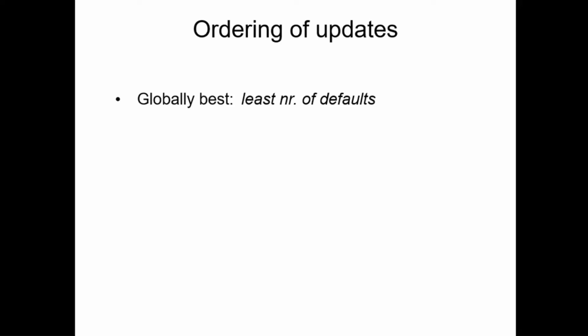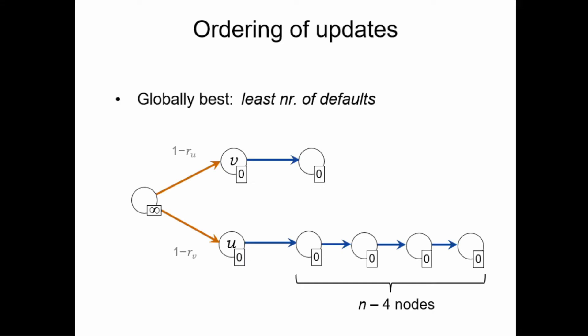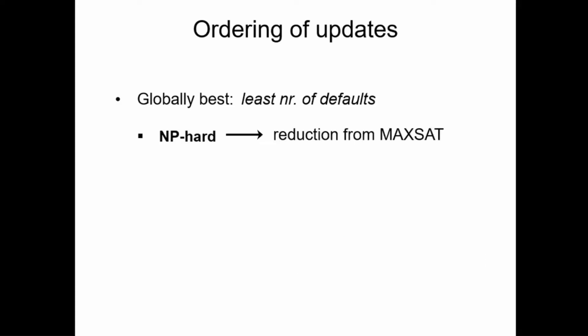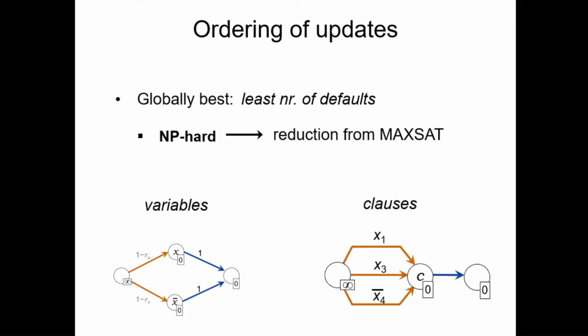From a financial authority's perspective, one natural goal would be to find the ordering that produces the smallest number of defaulting banks in the final outcome. One can create an example showing that this is highly dependent on the ordering: if V is the first to announce the default, the process terminates with a single default, while if U is the first, all nodes in the lower chain will eventually end up in default. One can also show that in general, finding this best ordering is an NP-Hard problem through a reduction from the MAX-SAT problem. Intuitively, we can use our first example system to represent a binary variable, which evaluates to true or false depending on whether the upper or lower node reports the default first. We can also devise a clause gadget where a bank avoids default exactly if one of the literals in the corresponding clause is set to true.